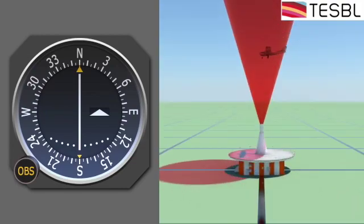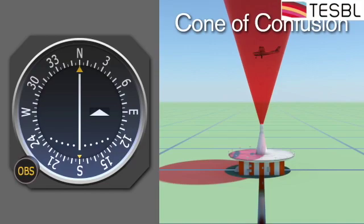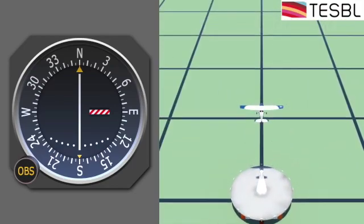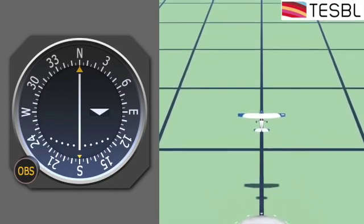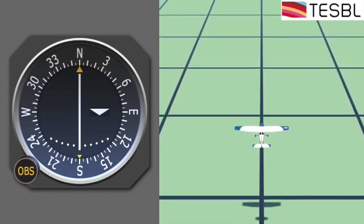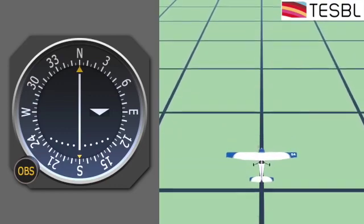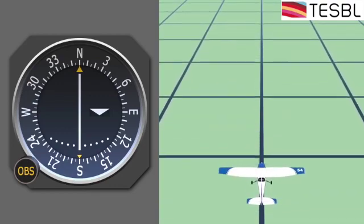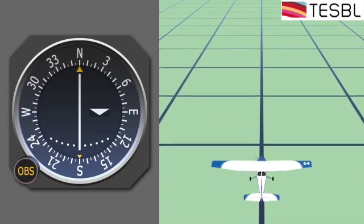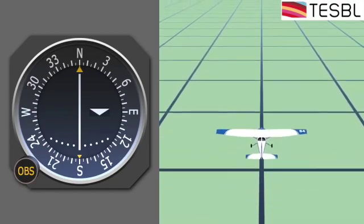As you pass over the top of the VOR, you enter a zone called the Cone of Confusion. The Cone of Confusion is the area above the VOR where the airplane does not get a clear signal. The to/from indicator will go to the off position because the receiver can't quite tell where you are. As you fly away from the VOR, the receiver gets the signal again and the flag flips to a 'from' indication. Now you can track the 360-degree radial from the VOR and continue flying northbound, tracking the radial away from the station.